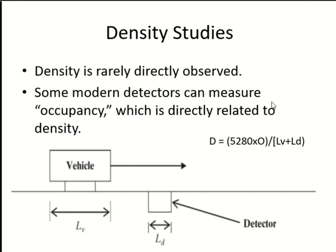Then we have density studies. What is density? It is vehicles per unit length. Density cannot be measured directly — in the last chapter we saw equations using flow, speed, and spacing to calculate density. Here we talk about doing density studies using a point detector — a detector placed under the surface of the road.